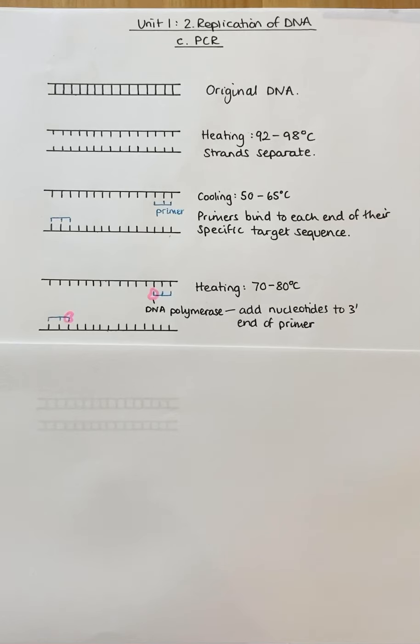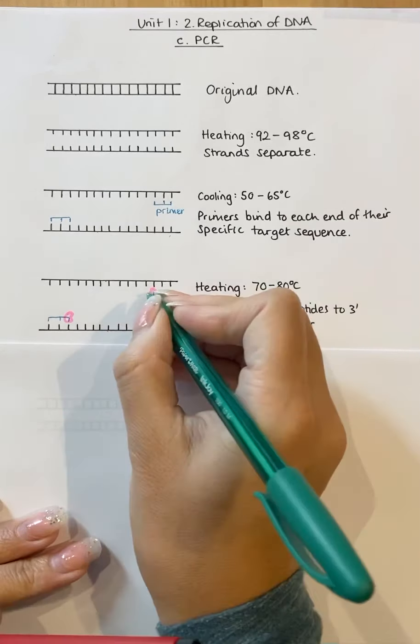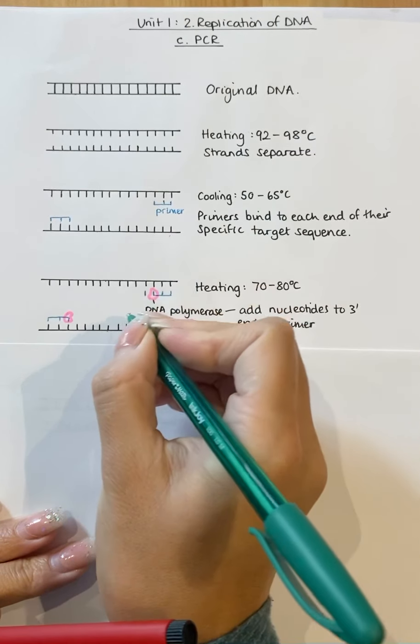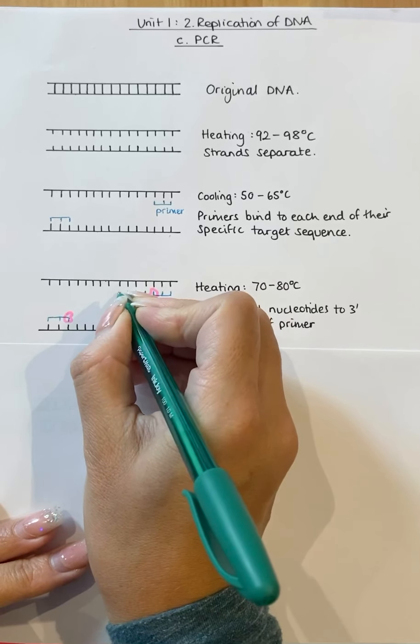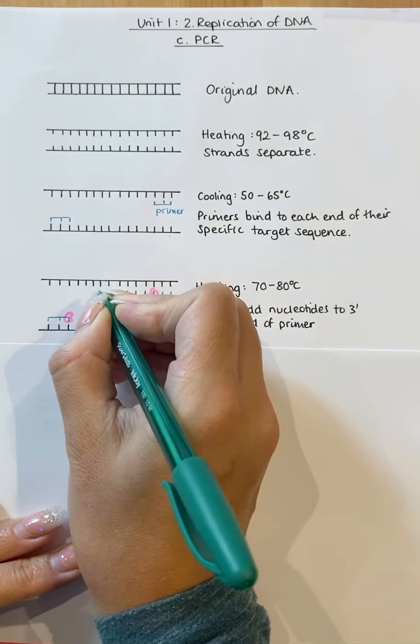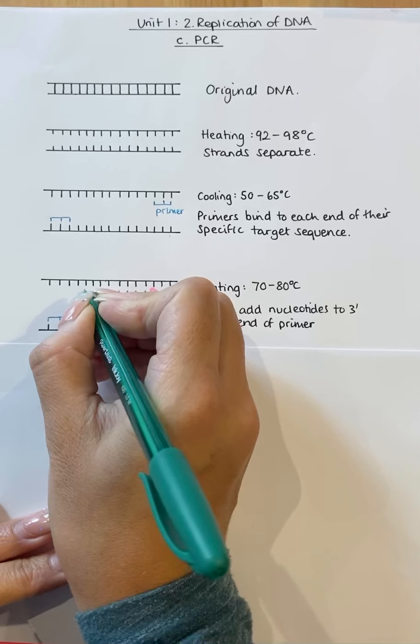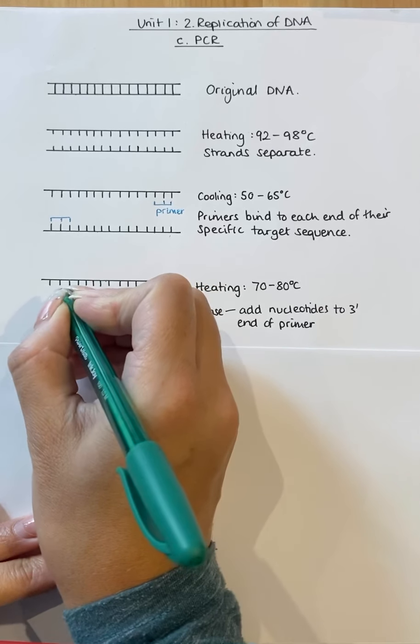So as before, in the previous DNA replication video, you get your appropriate base on your nucleotide—so adenine or thymine, cytosine or guanine—which is a complementary base pair, and form a new strand which is complementary to the open strand.